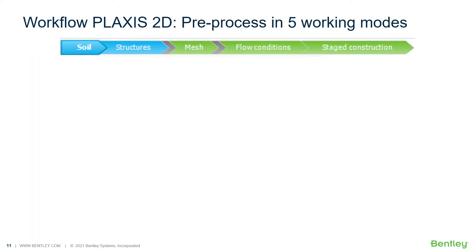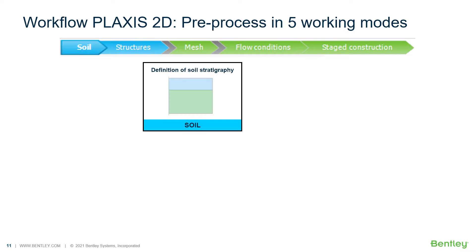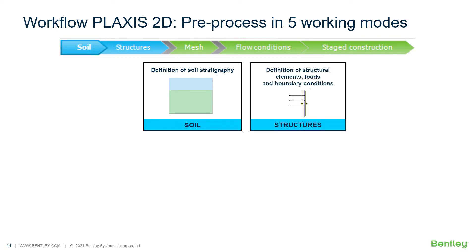Looking at the five steps in the preprocessing in Plexus input, there are five working modes we can recognize. We have two blue modes. The first one is the soil mode, where we define our soil layers and the soil layering profile. Then we define other parts of the model setup — structural elements, loading conditions, and boundary conditions — in structures mode. These two modes, the soil mode and structures mode, will define the geometry of your model.